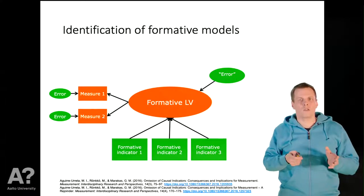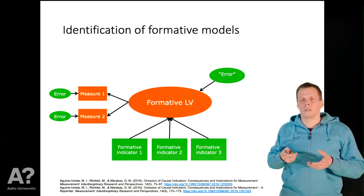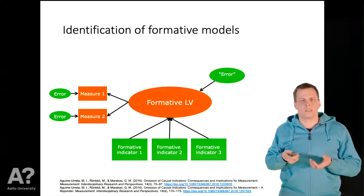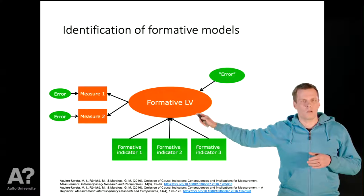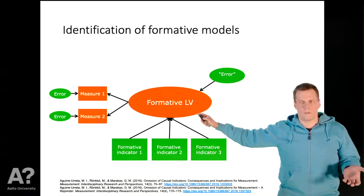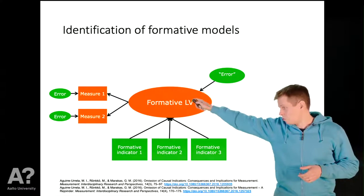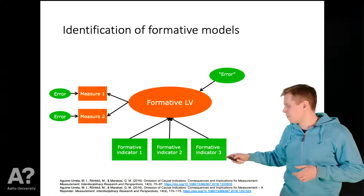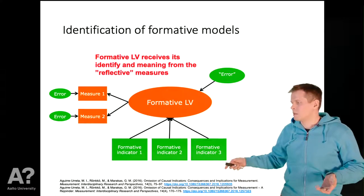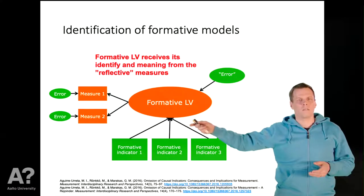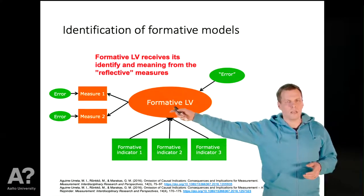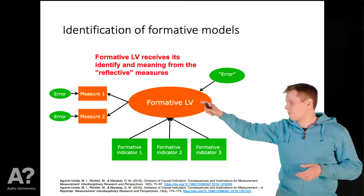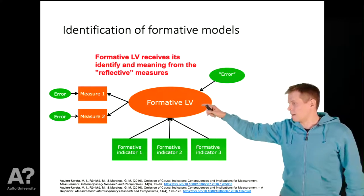This leads to an interesting problem: this latent variable is now defined by the two normal reflective indicators instead of the three formative or causal indicators. These two measures — measure one and measure two — actually give this latent variable its identity and meaning.